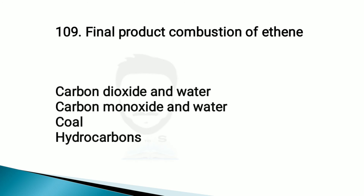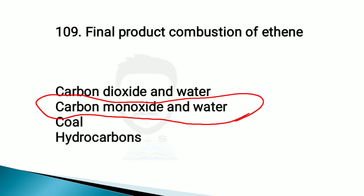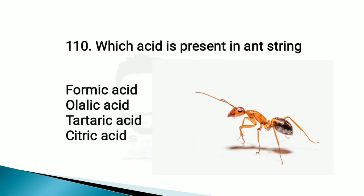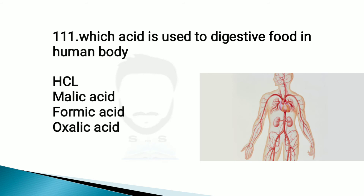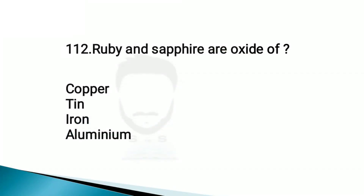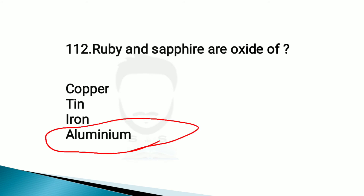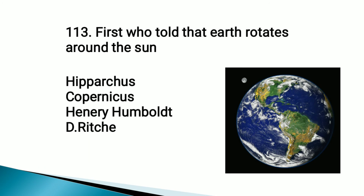The final product of combustion of ethane is carbon monoxide and water. Which acid is present in ant sting? Formic acid. Which acid is used to digest food in the human body? Hydrochloric acid. Ruby and sapphire are the oxides of aluminium. Who first said that the earth rotates around the sun? Hipparchus.